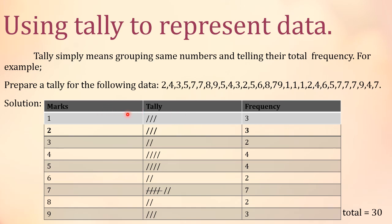Frequency is how many times each number occurred. For number 1: how many times did it occur? Three times — we stroke three and write it in figures. For number 2: it occurred three times as well — we stroke three and write it out. For number 3: searching through the data, it occurred two times — we stroke two and write it out in figures.